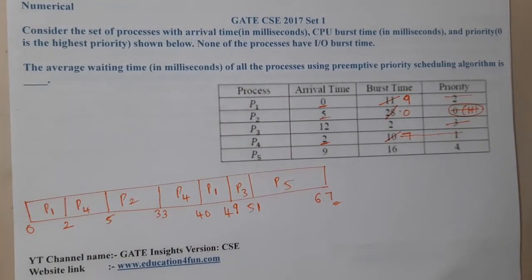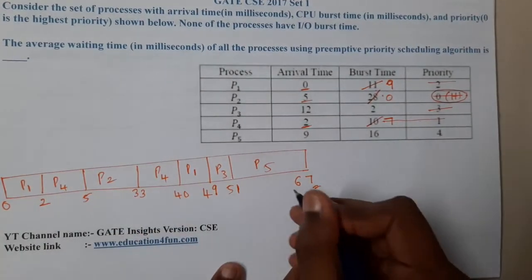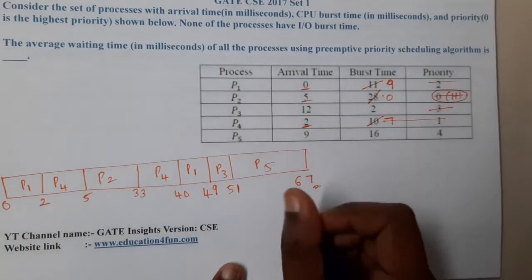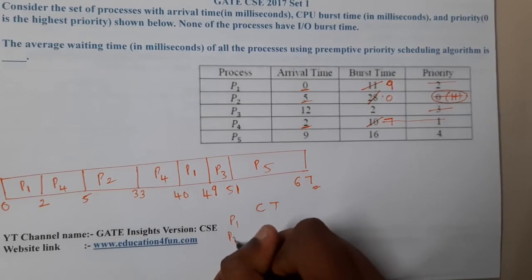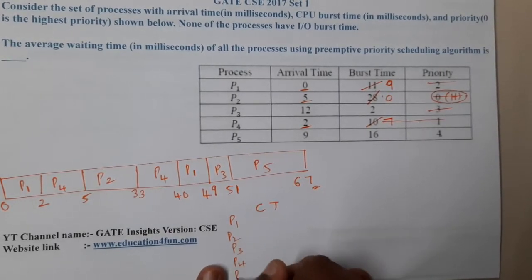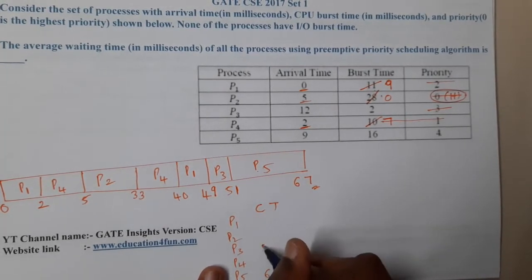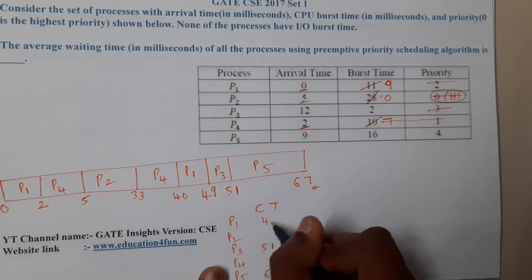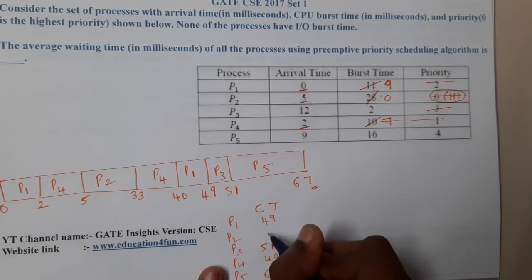Now let us fill in the completion time column. P1 completed at 49, P2 completed at 33, P3 completed at 51, P4 completed at 40, and P5 completed at 67.